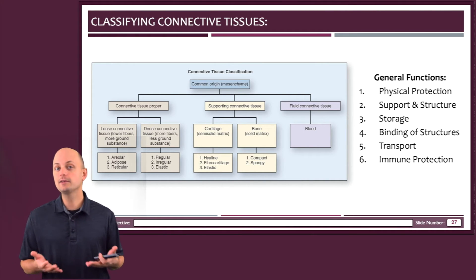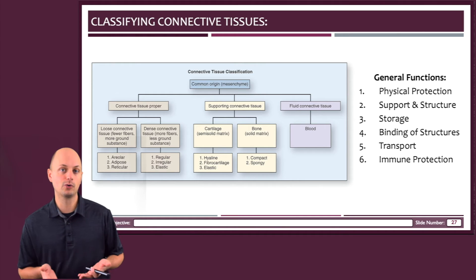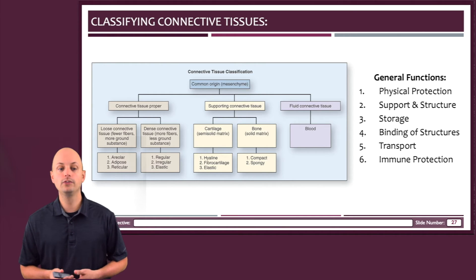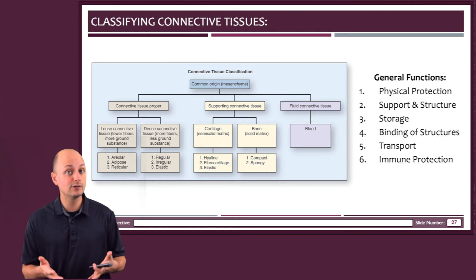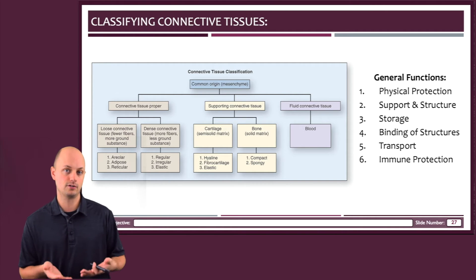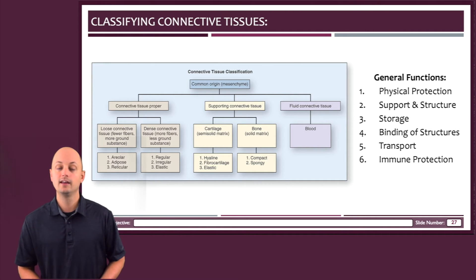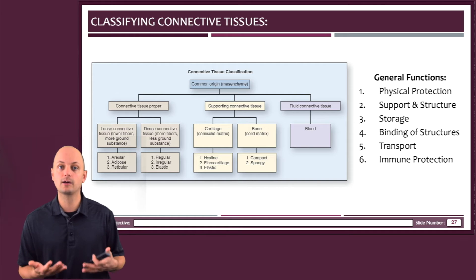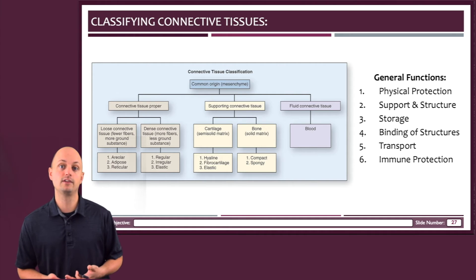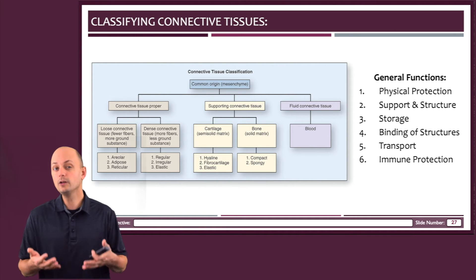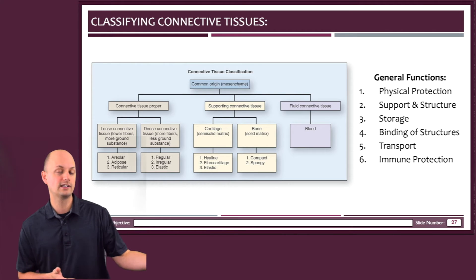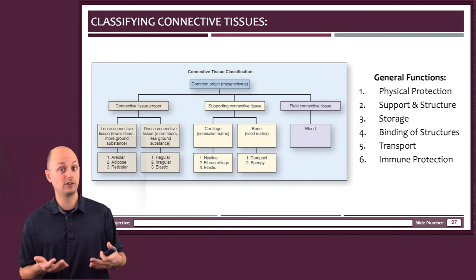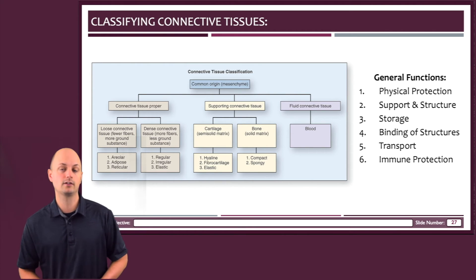We're going to see some examples of each of these as we move through the course, but you're only responsible for identifying tissues under a microscope within the lab portion of the course, so we're only really going to briefly talk about the functions of these connective tissues. We'll go in a little bit more depth about bone and cartilage, and then go in a lot more depth when we get to the musculoskeletal unit coming up.